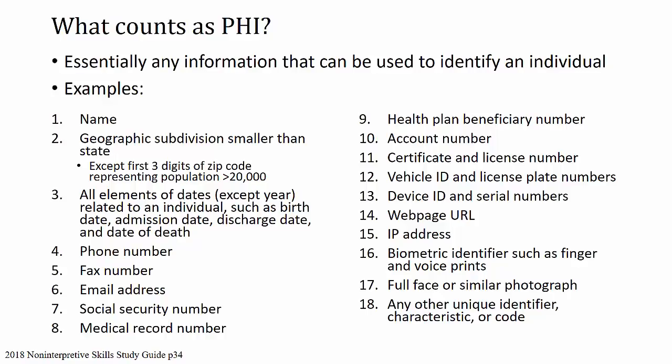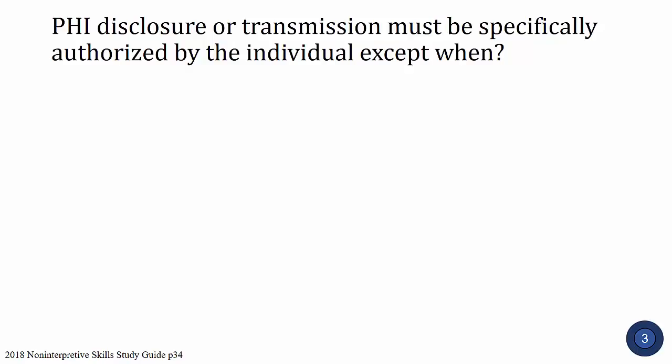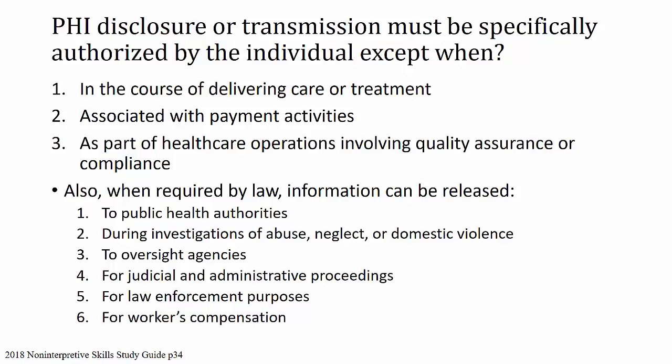Basically, if you can use the information to identify the individual, it counts as PHI. PHI disclosure or transmission must be specifically authorized by the individual except in three main situations: number one, in the course of delivering care or treatment; number two, associated with payment activities; and number three, as part of healthcare operations involving quality assurance or compliance.